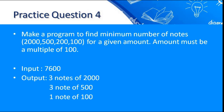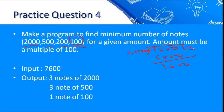Practice question 4 asks us to find the minimum number of notes for a given amount, where available notes are 2000, 500, 200, and 100 rupees. The condition is that the amount must be a multiple of 100, since the smallest note is 100 rupees. We start by dividing the amount by the largest note value, 2000, and the quotient gives the number of 2000-rupee notes.